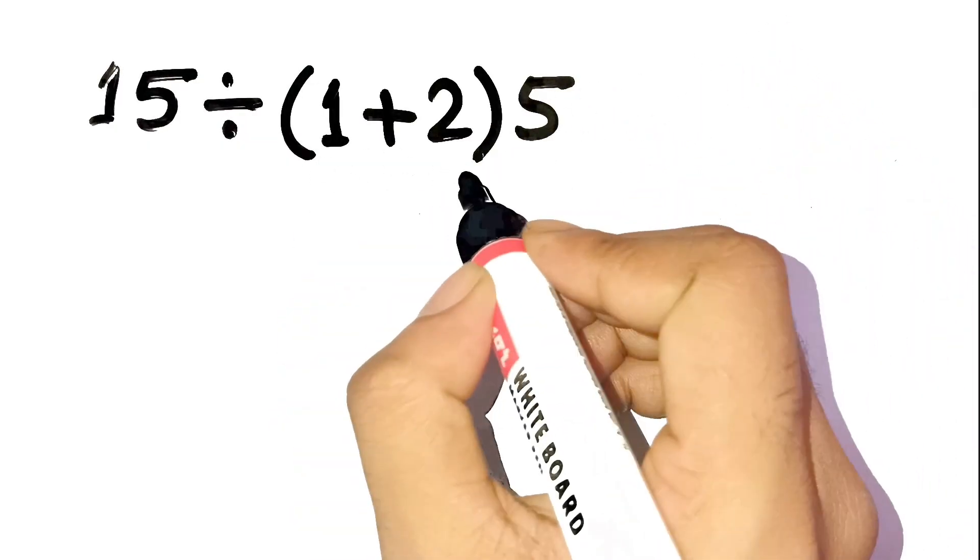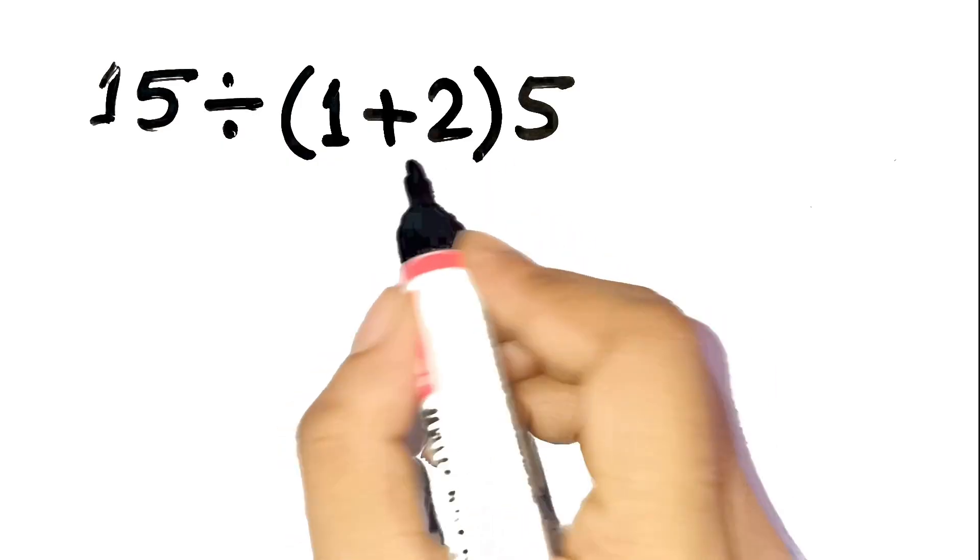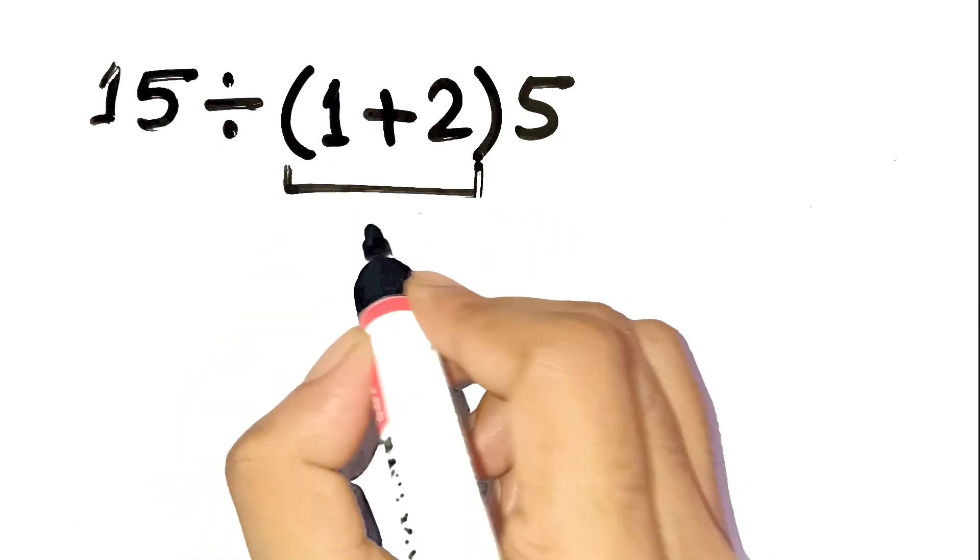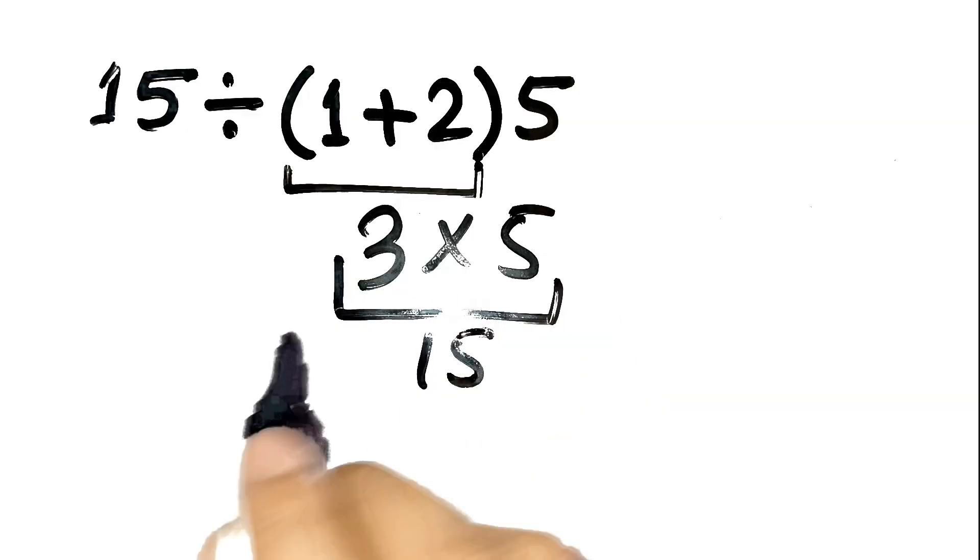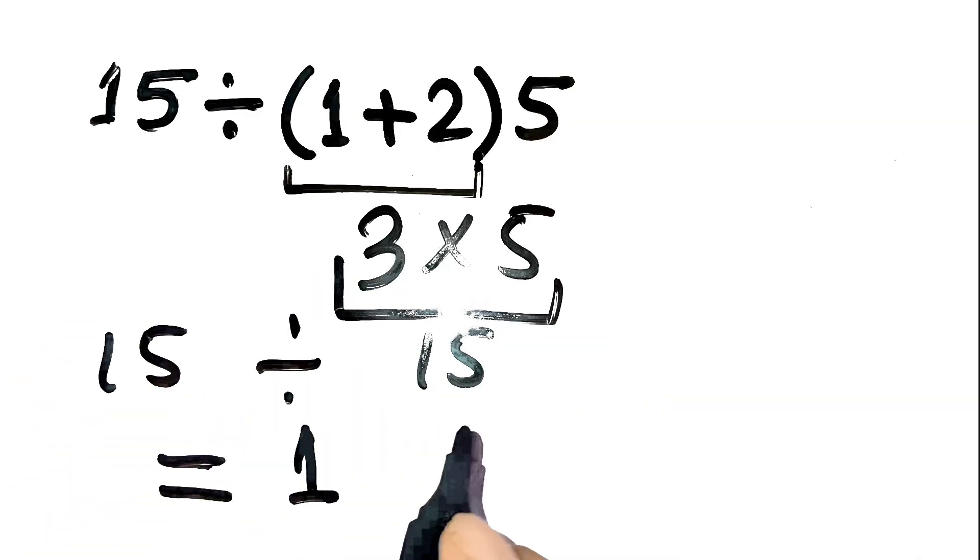I can almost hear your thought process. Inside the parentheses, 1 plus 2 is 3, then multiply by 5, that gives 15, and finally 15 divided by 15 is 1.